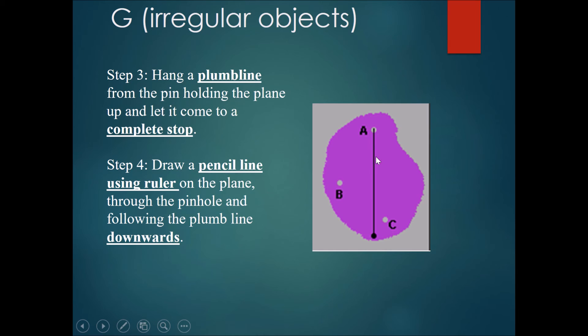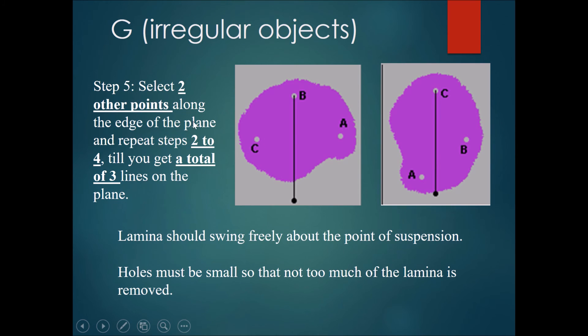Now, is this good enough? Absolutely not, because the center of gravity of an object is not a line but a point. The next step we have is to select one or two other points along the edge of the plane like B and C. We pick like somewhere like two other points. Now, we use these and we repeat steps two to four again.